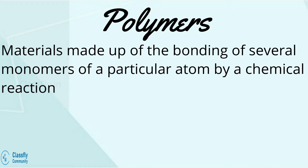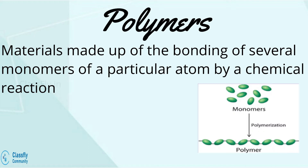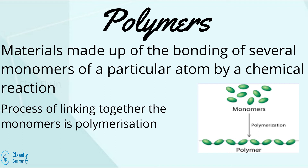Next, the polymers. Polymers are formed by the bonding of several thousand monomer materials by a chemical reaction. The process of linking together of the monomers is called polymerization. There are mainly two types of polymers produced: plastics and elastomers.